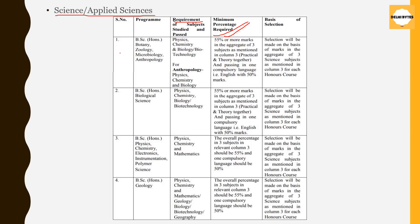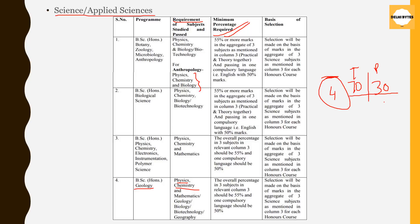There are different criteria for every subject you choose. For seeking admission in BSc Honors Geology, you have to have studied Physics, Chemistry, and any other subject from Maths, Geology, Biology, Biotechnology, or Geography — these are the compulsory subjects. Also, for calculating your best 4, your four subjects should have a composition of 70% theory and 30% practical. If it is not — say 60% theory and 40% practical — then your marks will first be reduced on a pro-rata basis.